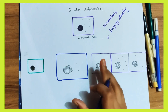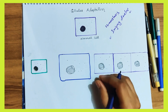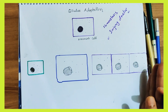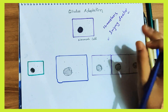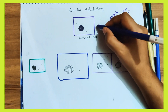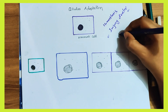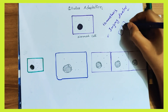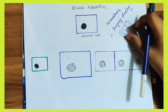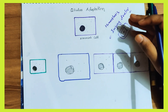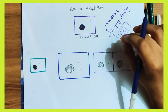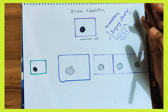When you get a cell injury, you have to recover the injured cells. The injured cell has to recover before it returns to its normal state.